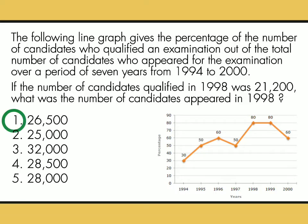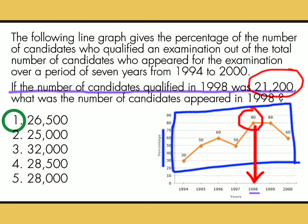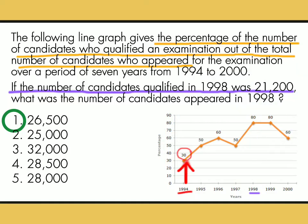The correct answer is 26,500. I'll explain. Focus tayo dito sa 1998. If the number of candidates qualified in 1998 is 21,200, meaning itong 80% ng 1998 is equal to 21,200 — kasi nga itong numbers dito ay percentage ng mga qualified sa bawat taon. The percentage of the number of candidates who qualified an examination out of the total number of candidates who appeared. So for example, in 1994, 30% ang qualified; sa 1995, 50% ang qualified, and so on. So sa 1998, ay 80% ang qualified.